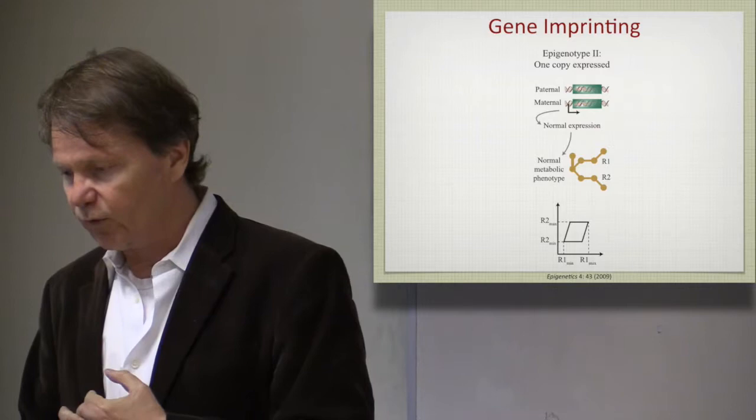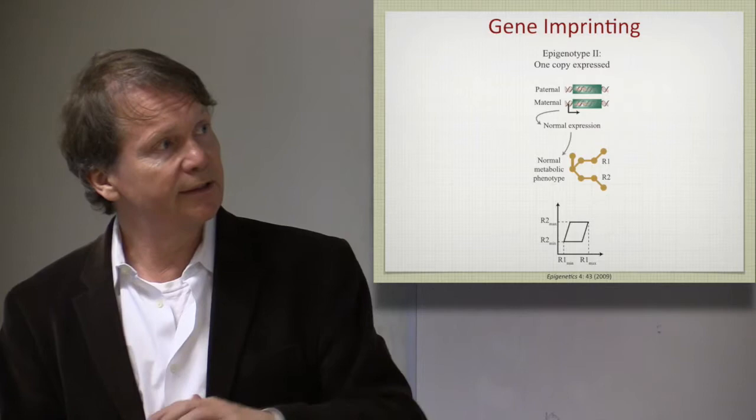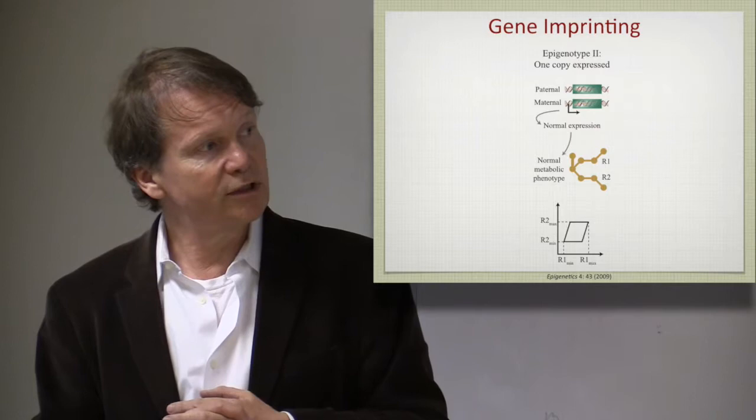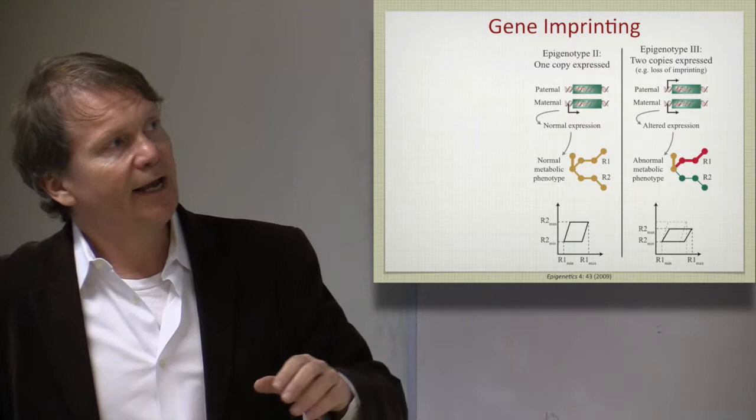Here is a normal situation in a diploid organism where both alleles, both the paternal and the maternal, are expressed. And let's say you would have two genes of interest there that could be imprinted, one related to one pathway and another pathway, so R1 and R2. And you can actually define by using FVA, an envelope of allowable states compared on your constraining parameters.